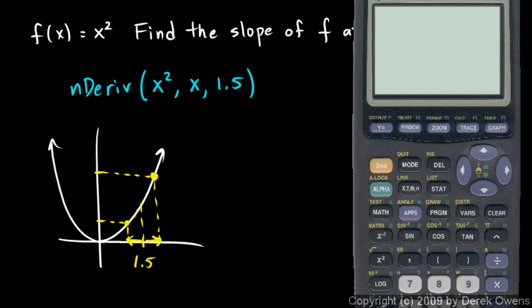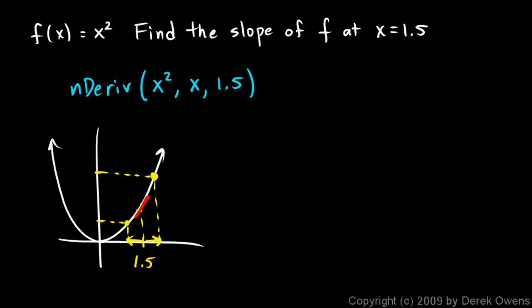So let's do it. Here's the calculator. Turn this thing on. And you need to hit the math key which is right here. And math and option 8 if you go down. And you can just press 8 and it says nDerivative. And there's the open parentheses and it's waiting for three arguments. So let's type in the function x squared comma and then x and comma and then 1.5. And hit enter and it tells us it has a slope of 3 right at that point. So that's the derivative of the x squared function at x equals 1.5.